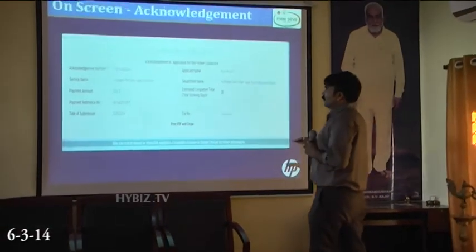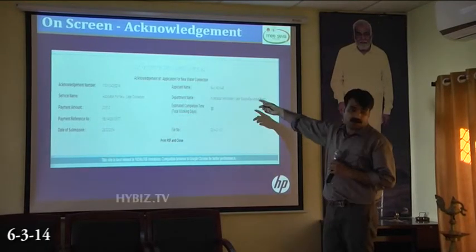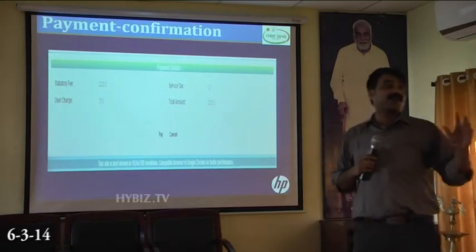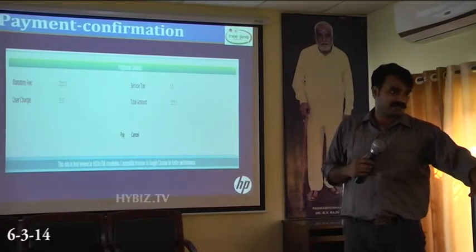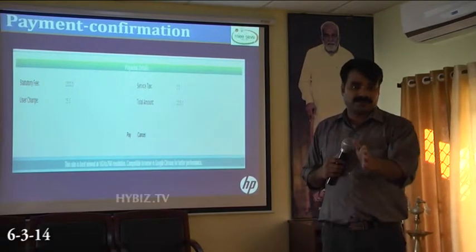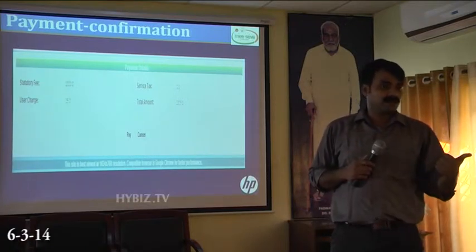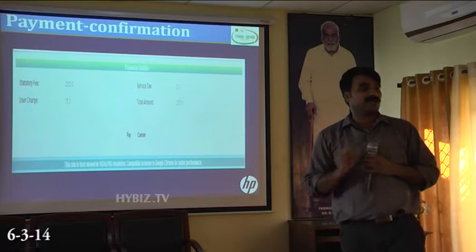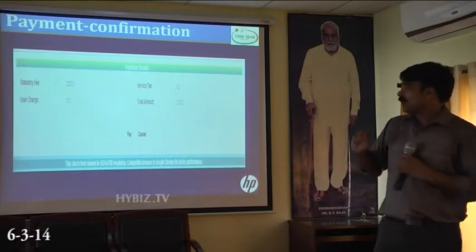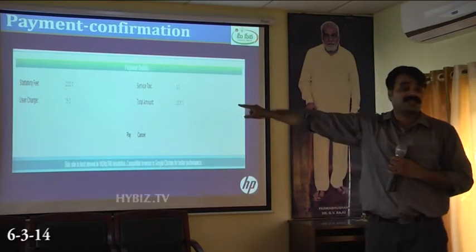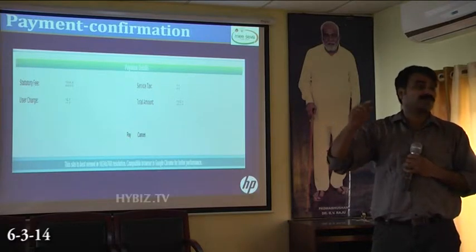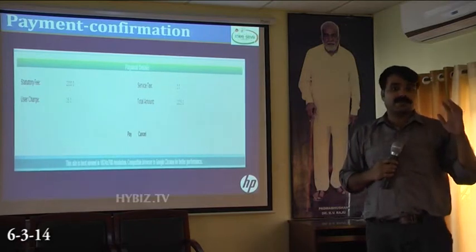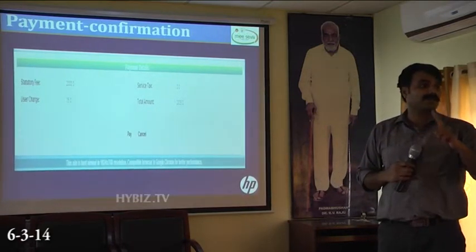Demand order. Now, this is the first payment page, wherein you have to pay the processing fee and the statutory charges. The processing fee is different for different connection types — for example, for a ration card connection it is different, for domestic individual it is different, for commercial it is different. You need not calculate it — the system will automatically calculate and display it on your screen, and that amount is non-editable. If it is showing 2000 rupees, it means you have to collect 2000 rupees from the user. This is only the processing fee, and it is non-refundable. If in any case the application gets rejected, this 2000 rupees will not be refunded.